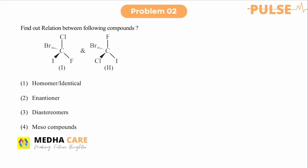Let's see the second question, which is a very important question. You can solve this in different ways — firstly by finding the R/S configuration of the two carbons. But here we will do it in a different way called the group exchange method. What we do is take one structure as fixed and perform operations on the other. We will exchange the positions of fluorine and iodine.